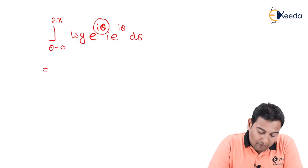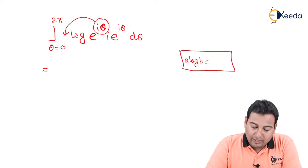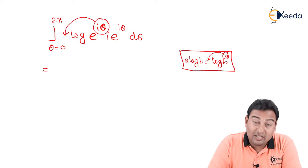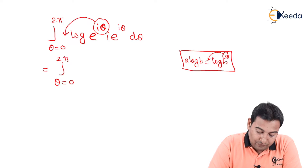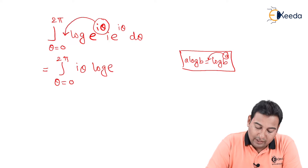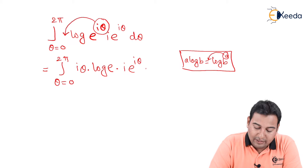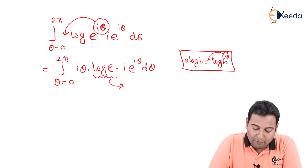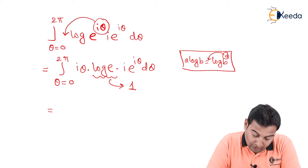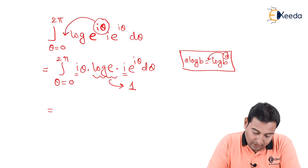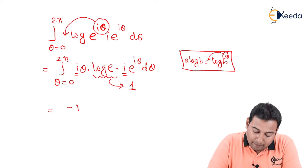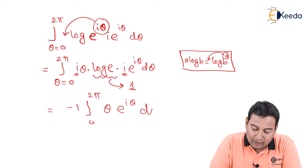Using the logarithm property log(b^a) = a·log(b), log(e^(iθ)) = iθ · log e, and since log e = 1, this simplifies to iθ. So the integral becomes ∫₀²π iθ · ie^(iθ) dθ. The two i's multiply to give i² = −1, which we take outside, giving −∫₀²π θ e^(iθ) dθ.